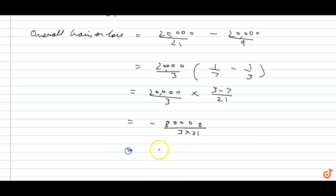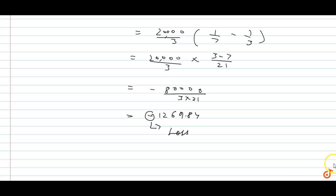This equals minus 80,000 upon 63, which simplifies to minus 12,698.4. The minus indicates loss. So overall there is a loss.